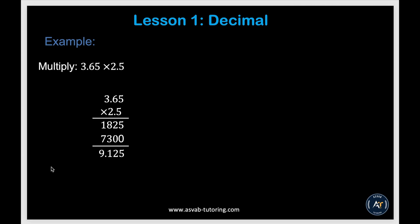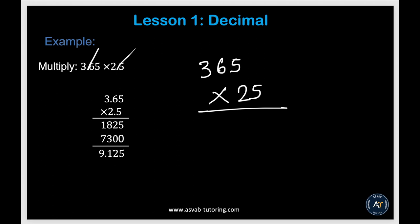Now let's learn how to multiply decimals. The easy approach: remove the decimal and multiply as whole numbers. For 3.65 times 25, ignore the decimal and compute 365 times 25, which gives 9125. Then count the total number of decimal places in the original numbers — you have 1, 2, 3 decimal digits total — so move the decimal point three places from right to left. The answer is 9.125.